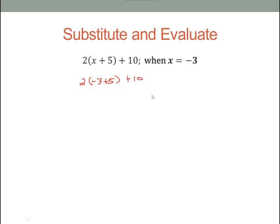Now we're going to use our order of operations after we substitute. So we're going to work inside parentheses since we can simplify negative 3 plus 5, which leaves us with positive 2. Then we would multiply, 2 times 2 is 4. And the final step is addition. 4 plus 10 would give us 14.